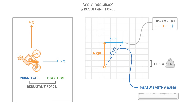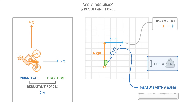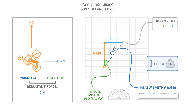And then we can convert that into newtons using our scale. So because each centimetre is 1 newton, our resultant force would be 5 newtons. To find the direction of the force, we just measure this angle here with a protractor, which would give us around 37 degrees. So we could say that the resultant force is 5 newtons at a bearing of 37 degrees from north.